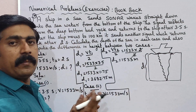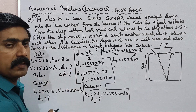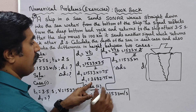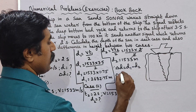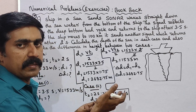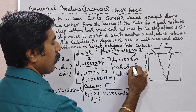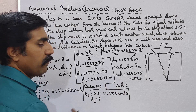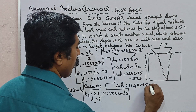Difference in height — difference in depth. Therefore, change in depth, delta D, is equal to D1 minus D2. That is 2682.75 minus 1533. So delta D, change in depth or change in height, is equal to 1149.75 meters.